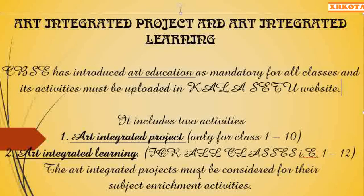CBSE has linked every state with some other state. For example, Rajasthan is paired with Assam. So in the art integrated project, at least one project every child has to make on an art related to Assam. Further, I'll elaborate on what type of project to make and how many projects there are to make.